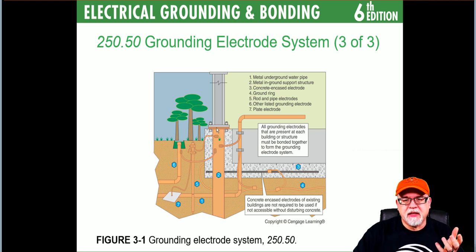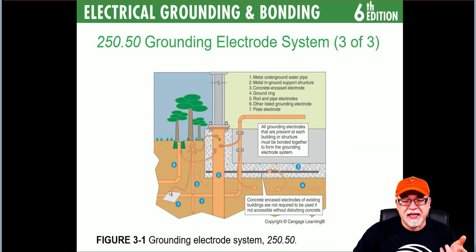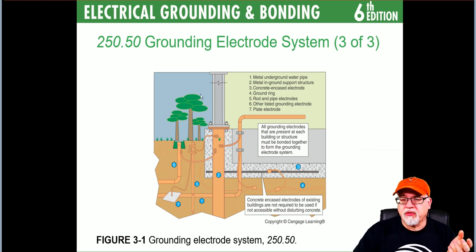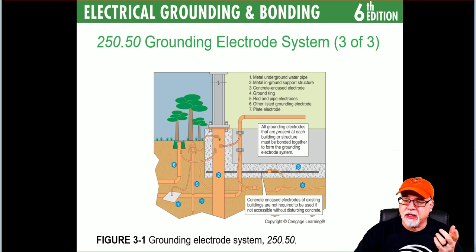An interesting thing many people think is that the grounding electrode conductor to ground rods has to be continuous through it. If you supplement the ground rod with another electrode because it doesn't meet 25 ohms or less — in this example supplemented with a plate — the grounding electrode conductor theoretically stops at the first rod, and the connection to the next electrode becomes a bonding jumper. All these types of things get covered in our course.